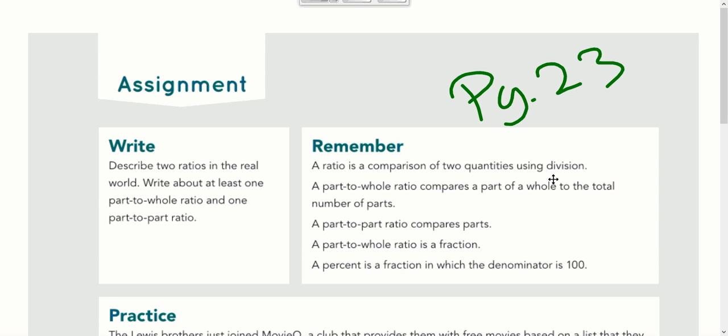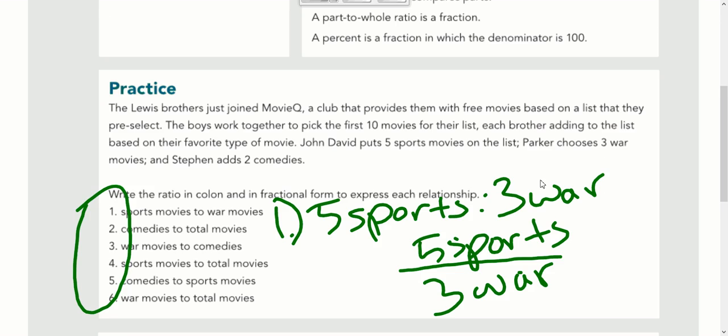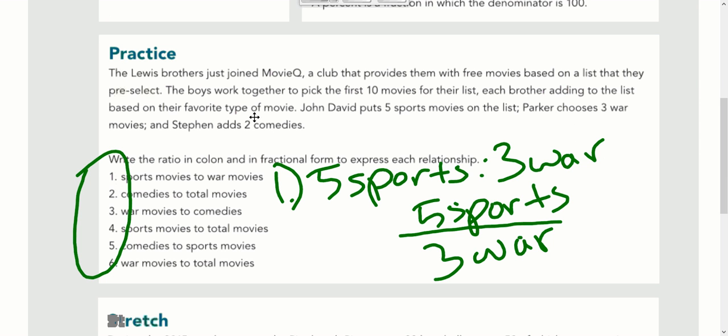Now, going back to this ratio idea: part-to-part and part-to-whole ratios. On page 23, you need to read this paragraph. All the information you need is up there. We're going to write the ratio in colon and in fractional form to express each relationship. So we're going to have two answers for each problem.